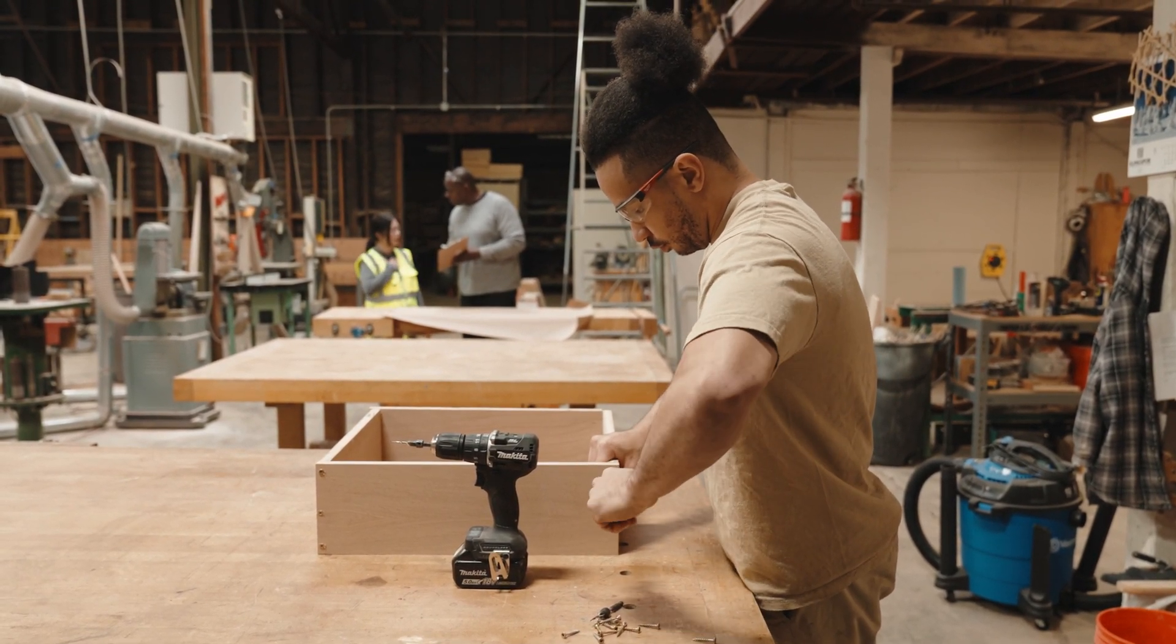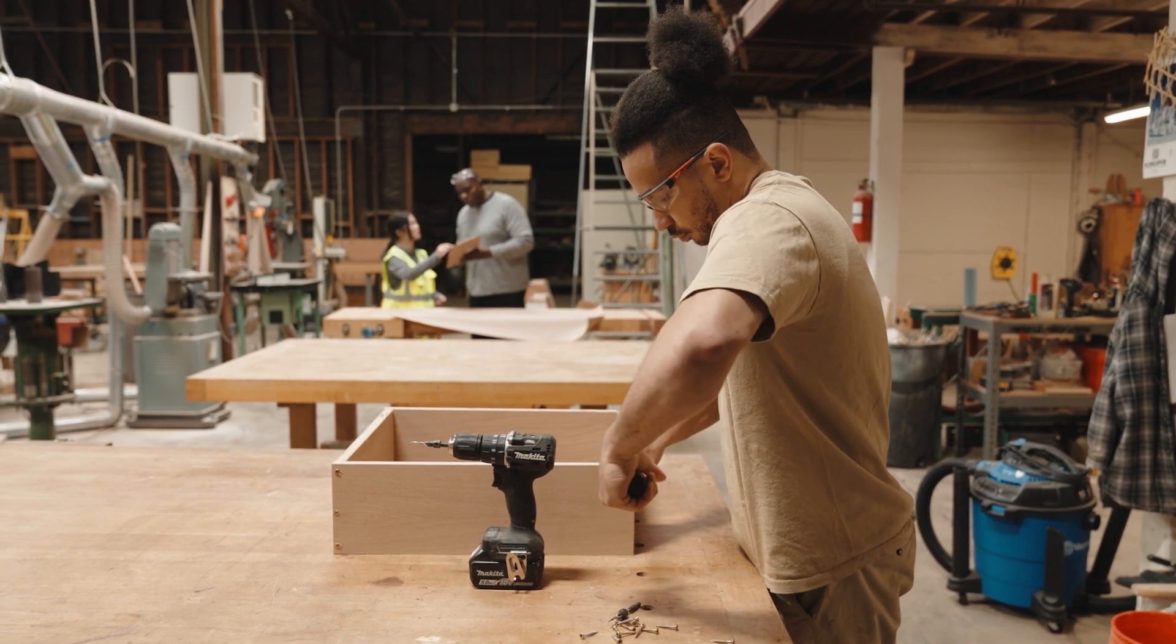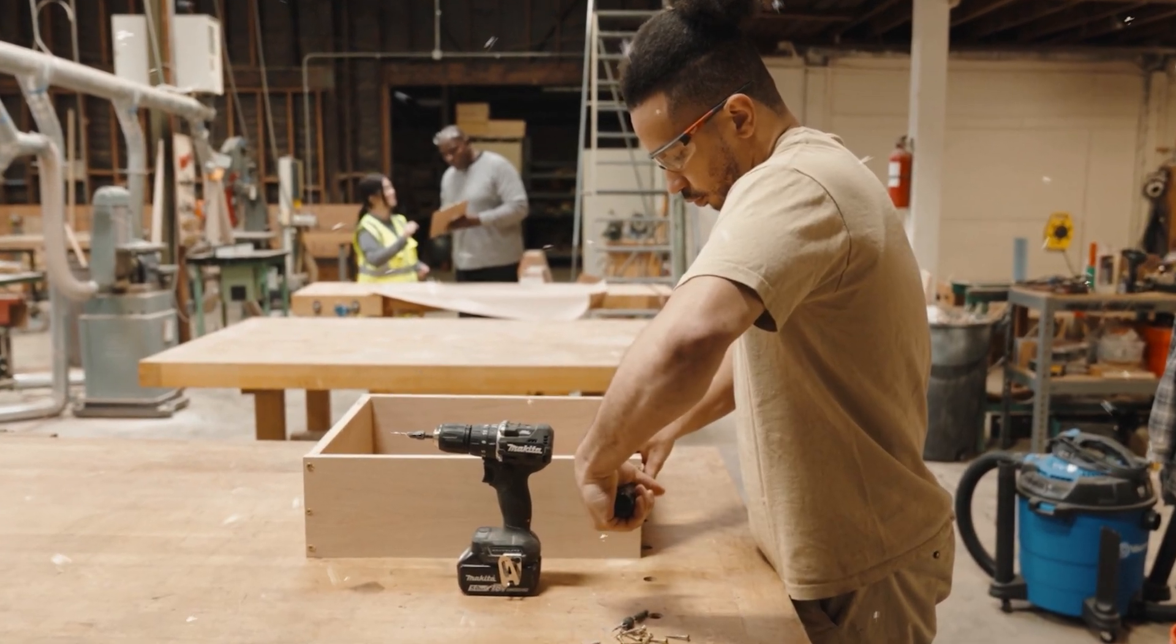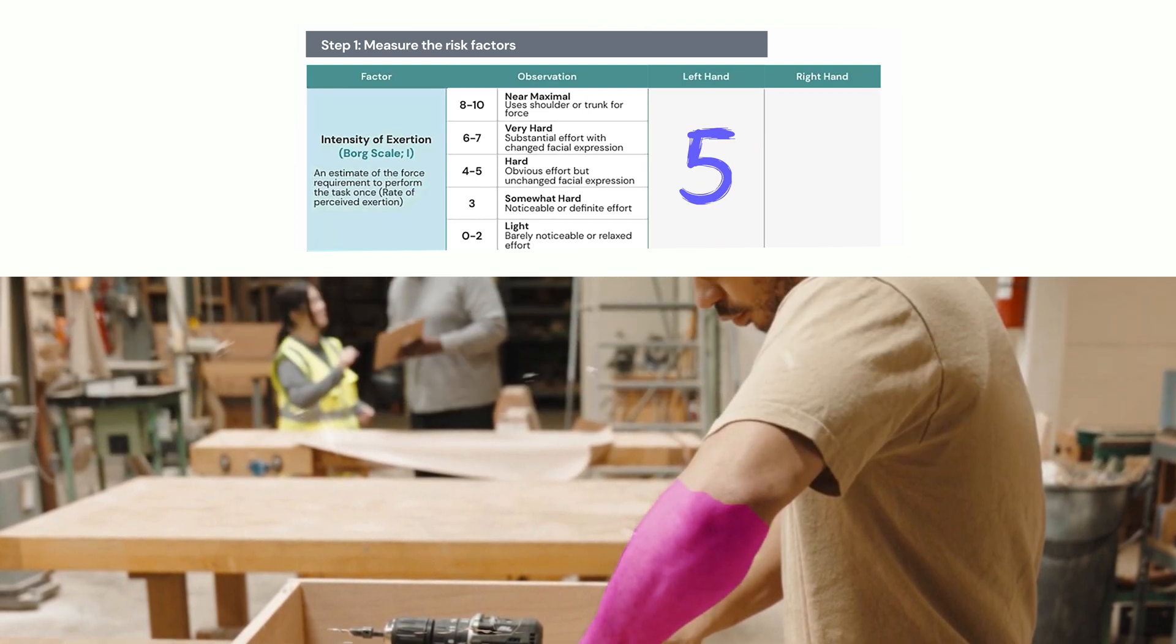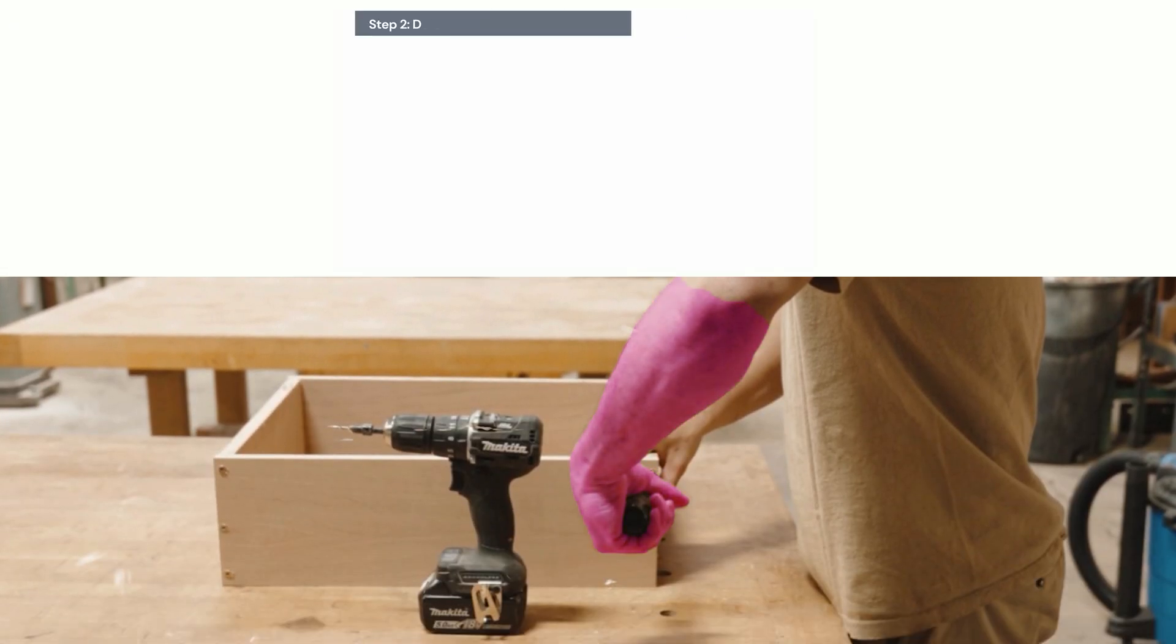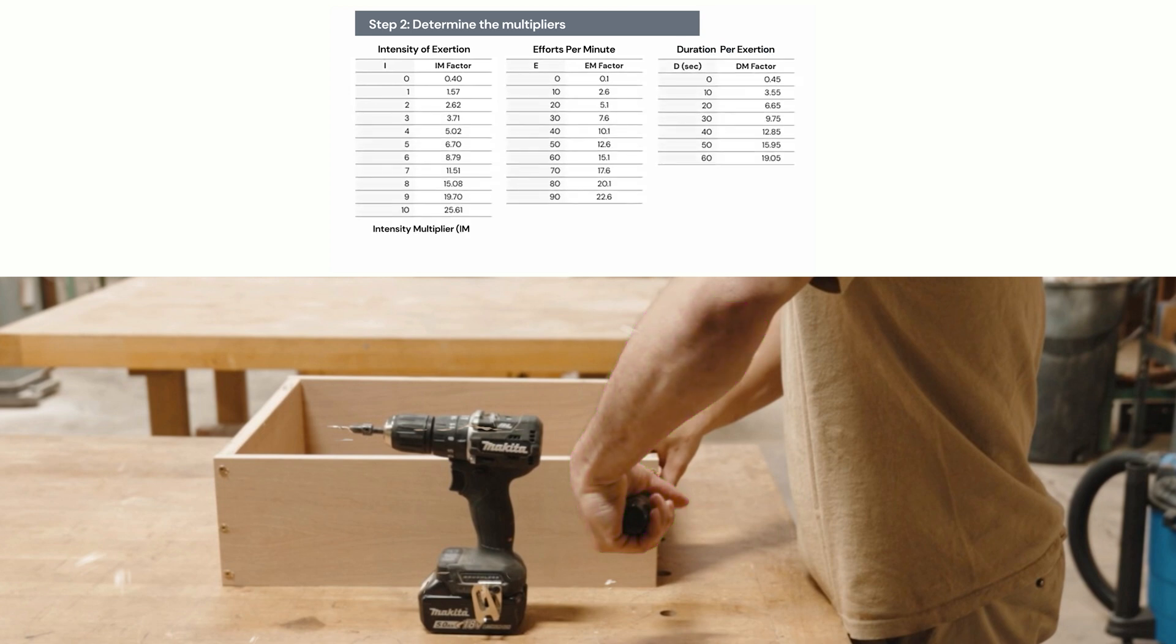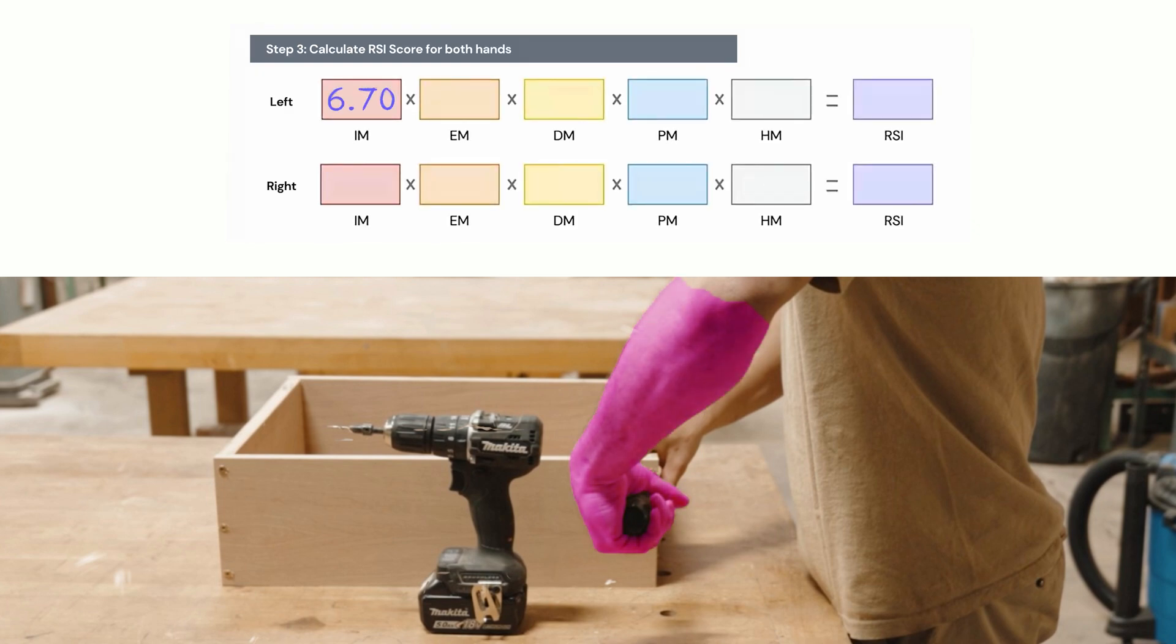So first thing he's going to do is we're going to look at the left-hand intensity of his task. You'll notice a lot of cranking with that left hand. So what we do is we go in the upper left, and you'll see there's a Borg scale, which means an effort scale. And we're going to give him a 5, a 4 to 5, which means a hard task, but he's showing no facial expression, even though he is cranking pretty tough. We're going to take that 5, we're going to go to step 2. We're going to look for the corresponding conversion factor for intensity. Once we find that number 5, we're going to find the corresponding conversion factor. We're going to plug that conversion factor into the left red box there, 6.70. And then we're going to drag that 6.70 into the red box for the left hand in the lower left corner of your worksheet.